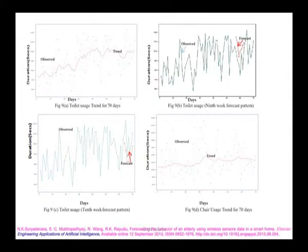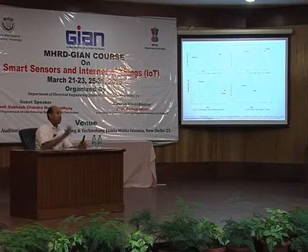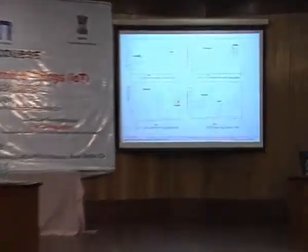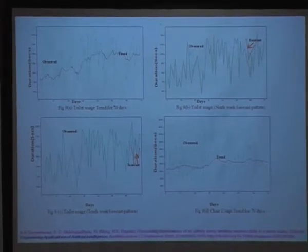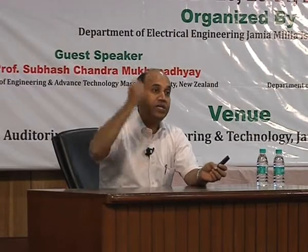You can do this type of system in two ways: either a standalone node that can measure, analyze, and upload data to the cloud, or you have a server where all data from the nodes comes for processing. We have done both ways. We are currently going for an Intel Galileo based system where you can upload data to the internet. The trend analysis gives you important information about the future behavior of the person.